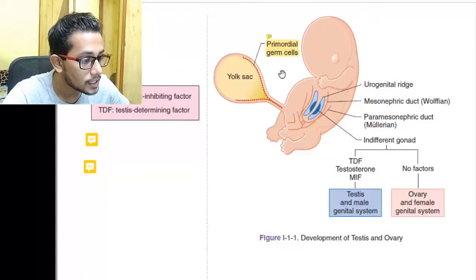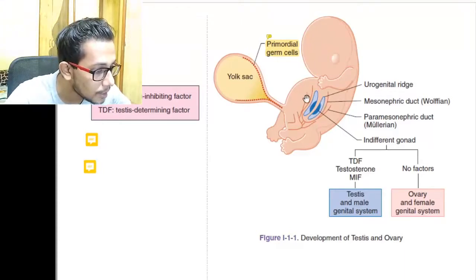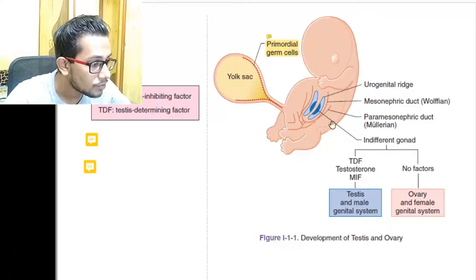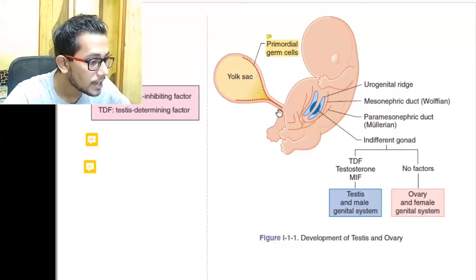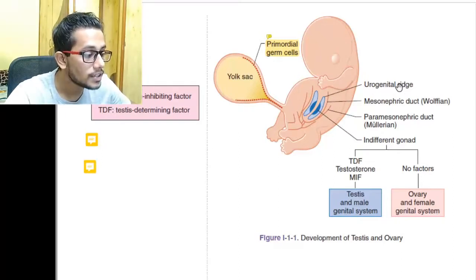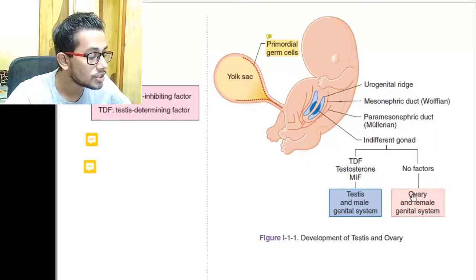The primordial germ cells are available on the lining of the yolk sac. As you can see in the image, they will travel all the way from the back of the abdomen to the dark blue portion — the indifferent gonads in the urogenital ridge — where they will determine if the gonad becomes a testis (male) or ovary (female).